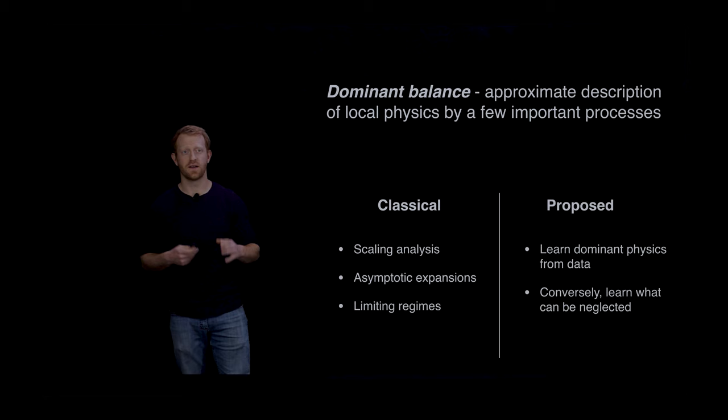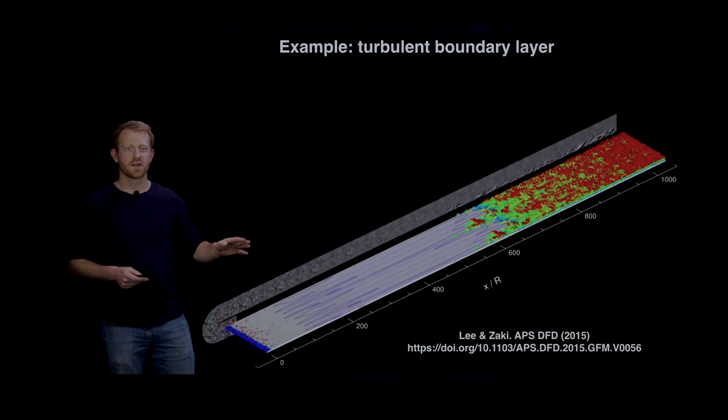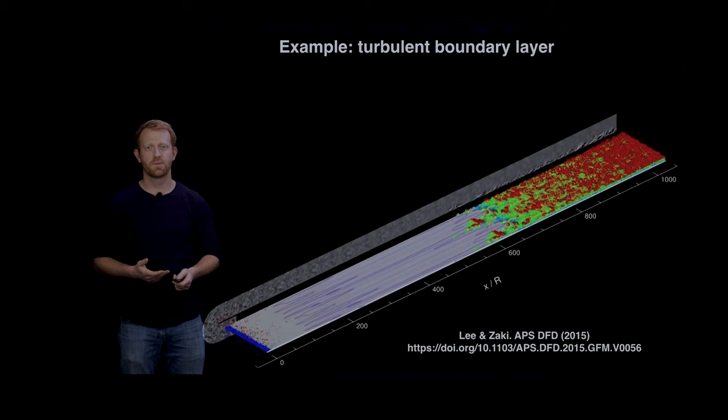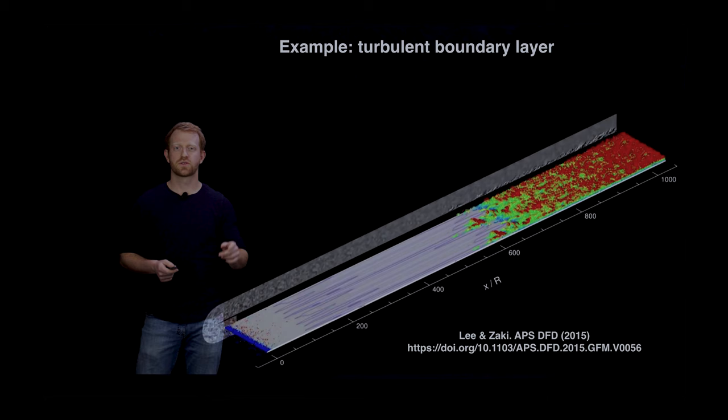To make this more concrete, let's walk through one of the examples from the paper. This is a canonical fluid dynamics problem called turbulent boundary layer. If you haven't seen much fluid dynamics or boundary layer theory, I'll go through the classic approach in a separate video.